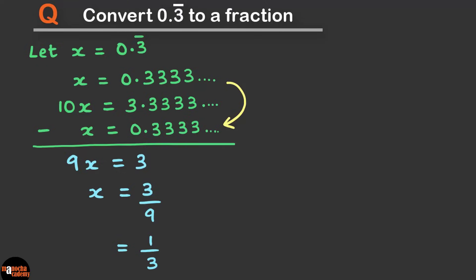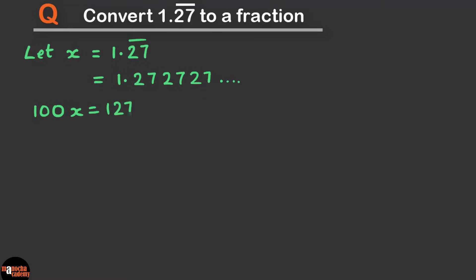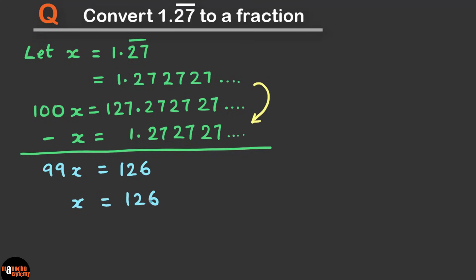Let's look at another example. Let x be the recurring decimal 1.27 recurring. To find another number with the decimal part matching, this time we can't multiply by 10 — we need to multiply by 100. In 100x, the decimal part matches. Subtracting x from 100x gives 99x = 126, and on simplifying we get 14 by 11. So we have converted the recurring decimal number to the fraction 14 by 11.